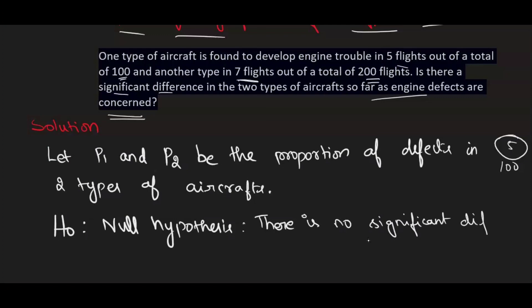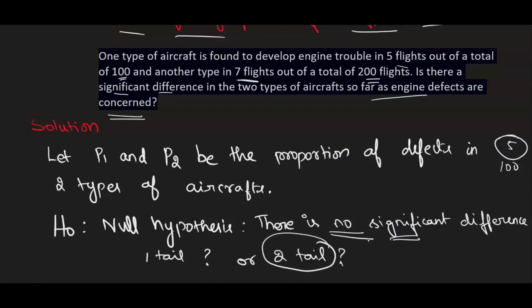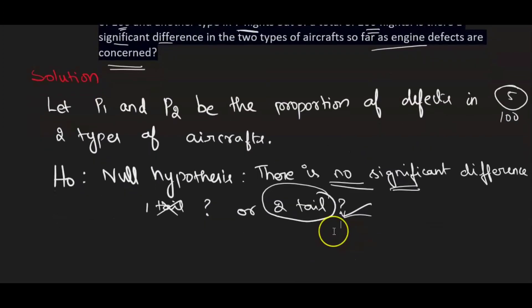Now, is this a one-tail test or two-tail test? When the null hypothesis says the proportions are equal — whenever the word 'equal' appears — we go for a two-tail test, not a one-tail test. If they ask for a difference between means or difference between proportions, always go for a two-tailed test.